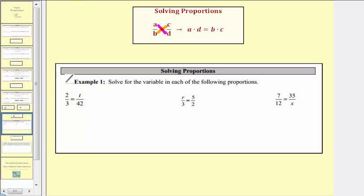It doesn't matter which cross product we find first. Let's find the cross product with the variable first. So three times t must equal two times 42. So again, we have three times t, or three t, equals two times 42.